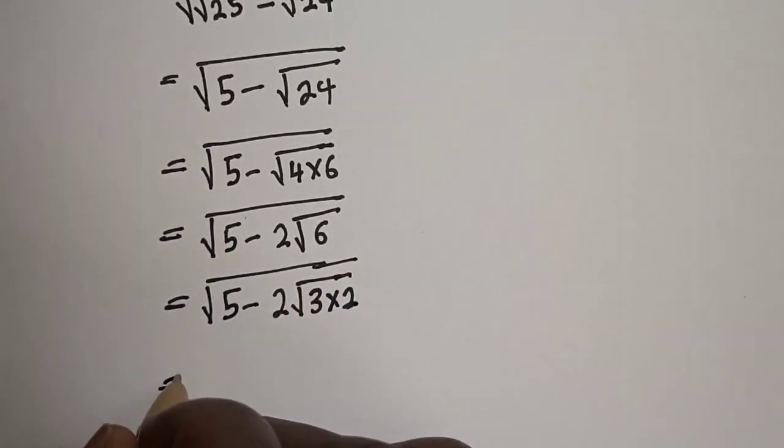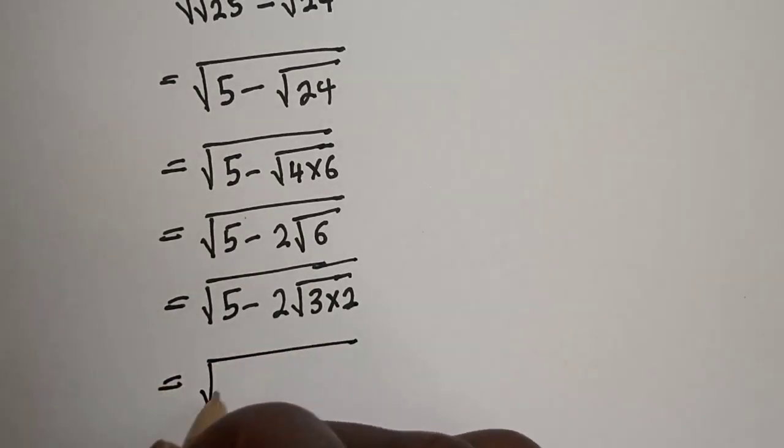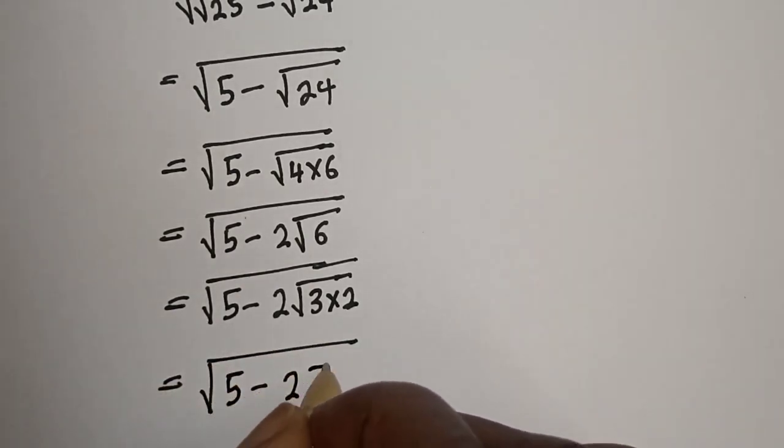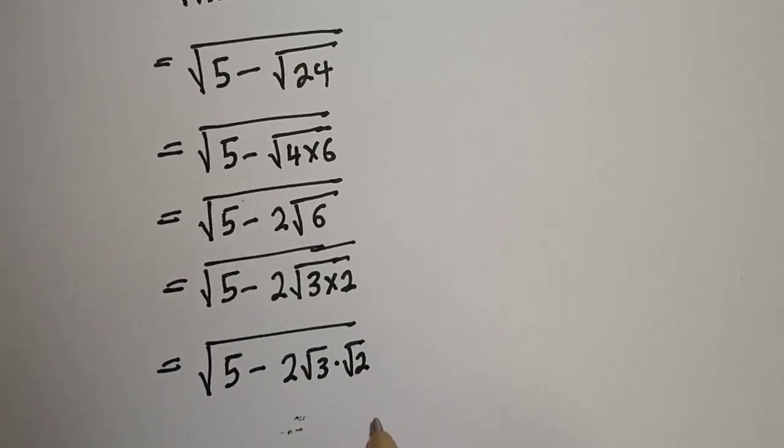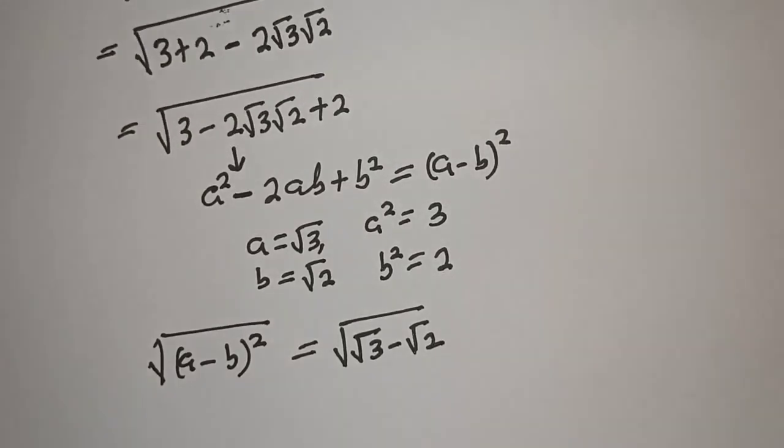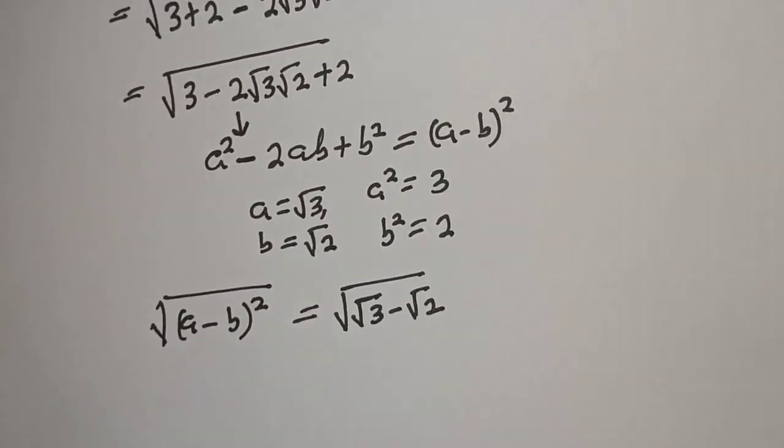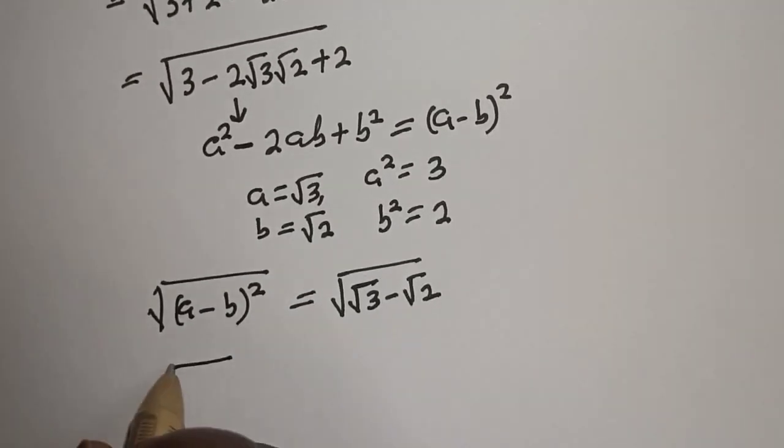Equal to square root of 5 minus 2 root 3 multiplied by root 2. 5 minus 2... Square root of 5 minus 2 a minus b.